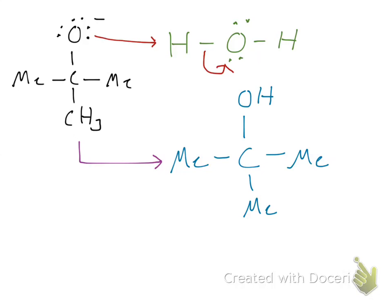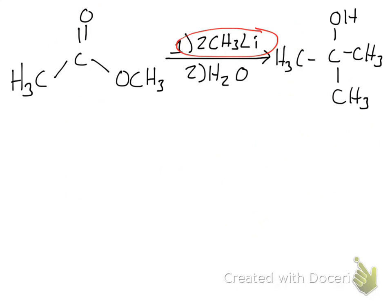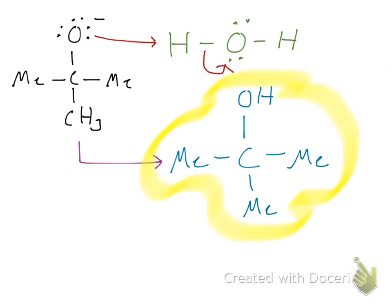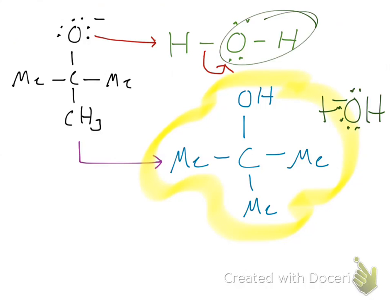This is exactly what we wanted to get in the beginning. Methyl, methyl, methyl onto that central carbon with OH — we have our tertiary alcohol, which we have converted from this methoxy ketone. The reaction has completely terminated and we're finished. And let's not forget: we're also going to have OH⁻ produced, because that's what we got from the water molecule when we moved those electrons back onto that oxygen.